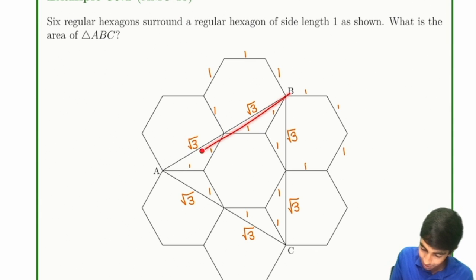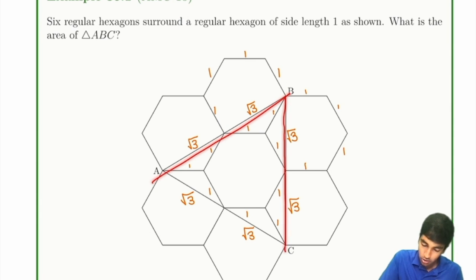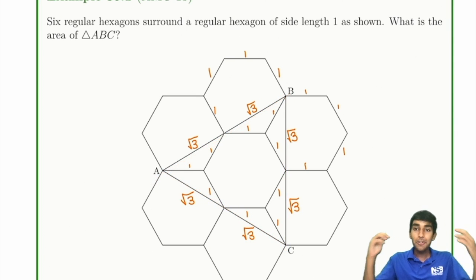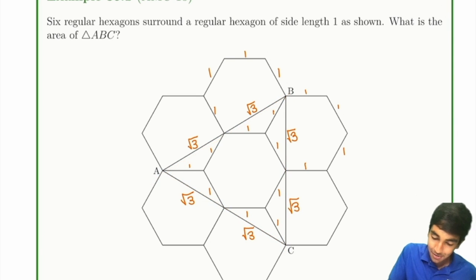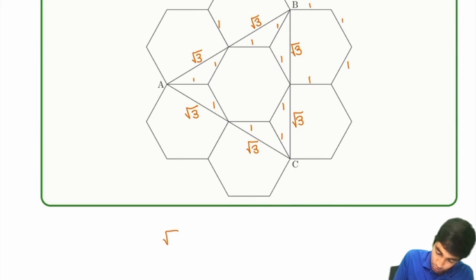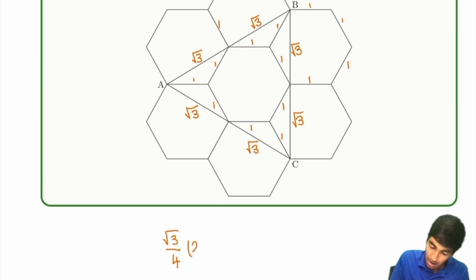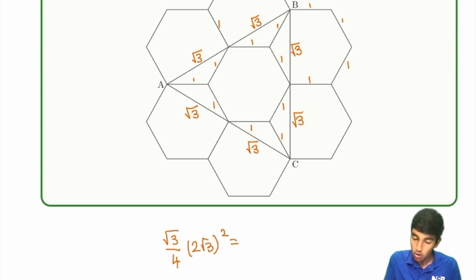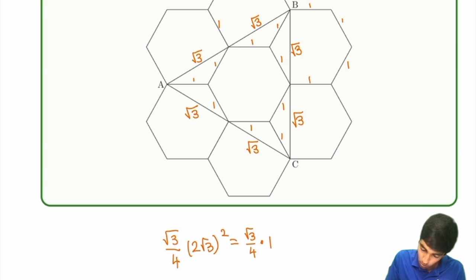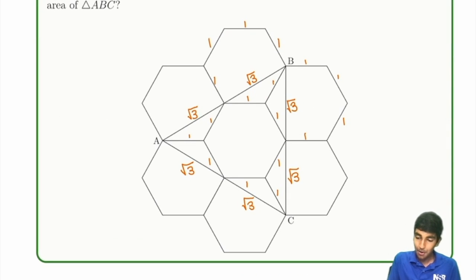We now have a triangle with sides of length 2√3, 2√3, and 2√3 — it's equilateral. Using the equilateral triangle area formula (√3/4) × side², with side = 2√3: that's (√3/4) × 12 = 3√3. That's our final answer. To summarize, all we had to do was use this cool property of the hexagon.